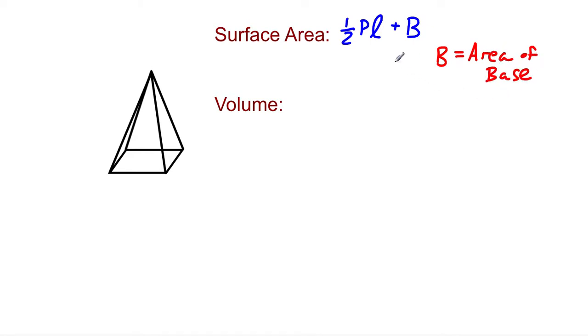And this L is the lateral height. And of course, capital P just stands for perimeter of the base. This actually is for regular bases. So whenever the base is a regular polygon, this formula applies.